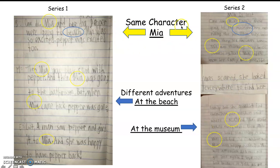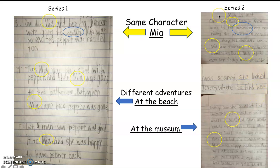Your books have the same character name but the character goes on different adventures. In the first series, Mia is at the beach — it tells all about what happened there. She was going with her dog, but then Pepper was gone from the beach, and at the end she found him. In series two it's still about Mia, but she's on a different adventure — she's at the museum and she got lost. So again, series books: same character, but different adventures.